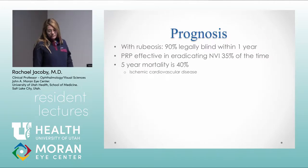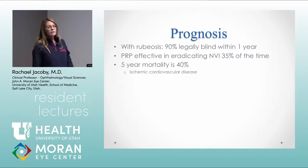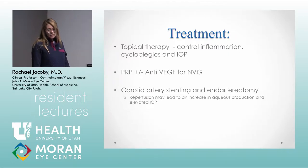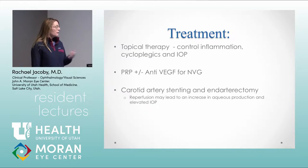The prognosis really isn't great. If they have rubeosis, 90% will be legally blind within one year. You can eliminate neovascularization about 35% of the time with PRP. Anti-VEGF agents can also help control the pressure. They have a pretty high five-year mortality rate due to cardiovascular disease. Treatment includes controlling inflammation with steroids and cycloplegics, managing intraocular pressure — often requiring shunting procedures or diode cyclophotocoagulation — and controlling neovascularization with anti-VEGFs and PRP. The main thing is also getting them to the vascular surgeon for carotid endarterectomy.